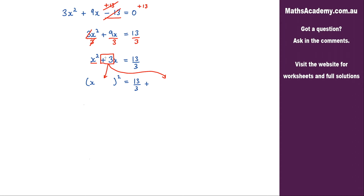Well we take that coefficient — it's positive, so I know I'm going to have a plus in here. And we've got a 3, so we take that 3 and we divide it by 2, giving us 3 over 2. Now obviously I do the same thing over here — I've got the 3 over 2, but I need to square this. So what we've got so far is x plus 3 over 2, and that is squared.